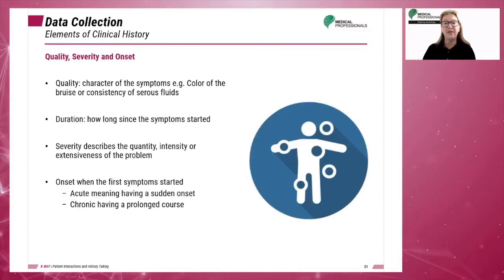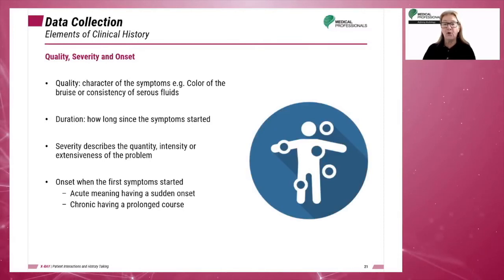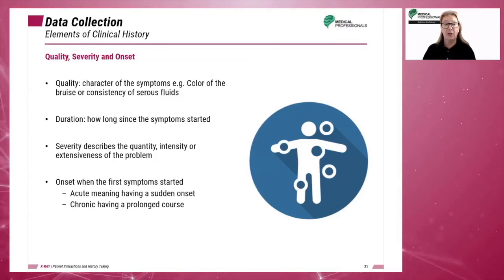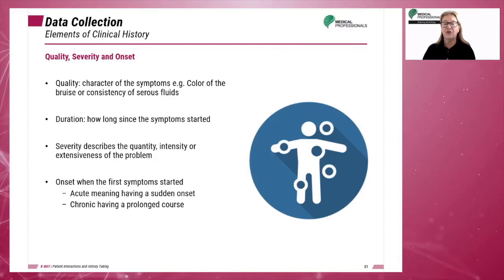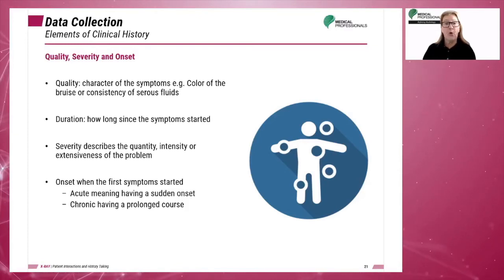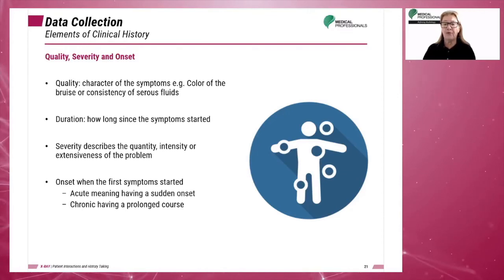Quality can be used to describe the symptoms that the patient presents — for example, localized versus general pain. Quality could also describe the frequency of pain, such as throbbing, dull, burning, radiating, or crushing. Duration describes the period since the outbreak of the symptoms. Severity describes the amount, intensity, or extent of the complaint — for example, a burn or the number of fractures.